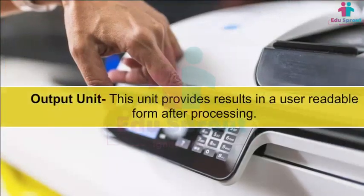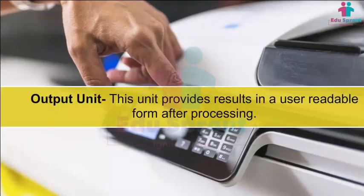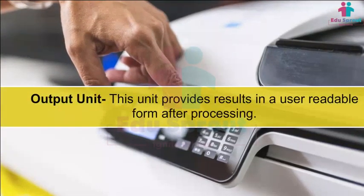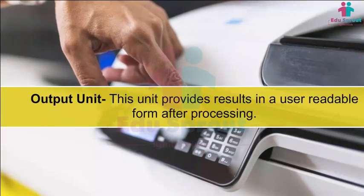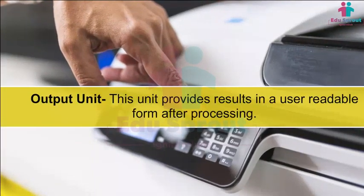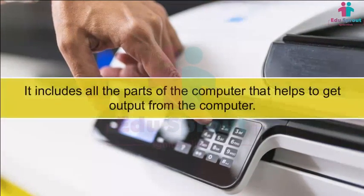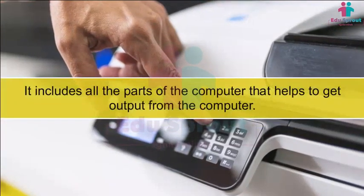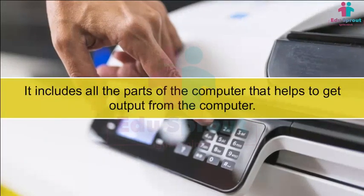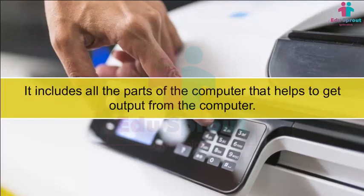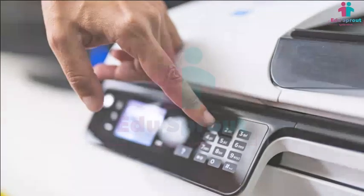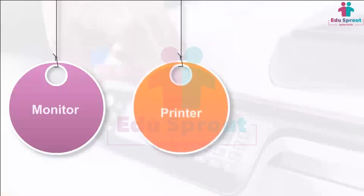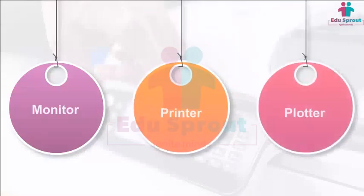Output Unit: This unit provides results in a user-readable form after processing. It includes all the parts of the computer that help to get output, like monitor, printer, plotter, etc.